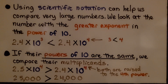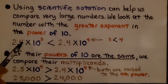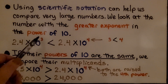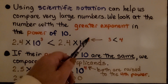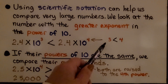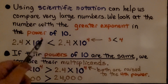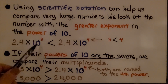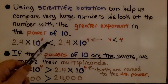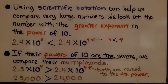We look at the number with the greatest exponent in the power of 10. We can quickly see that we have 2.4 times 10 to the third power and 2.4 times 10 to the fourth power. Since 3 is less than 4, 2.4 times 10 to the third power is the lesser number.